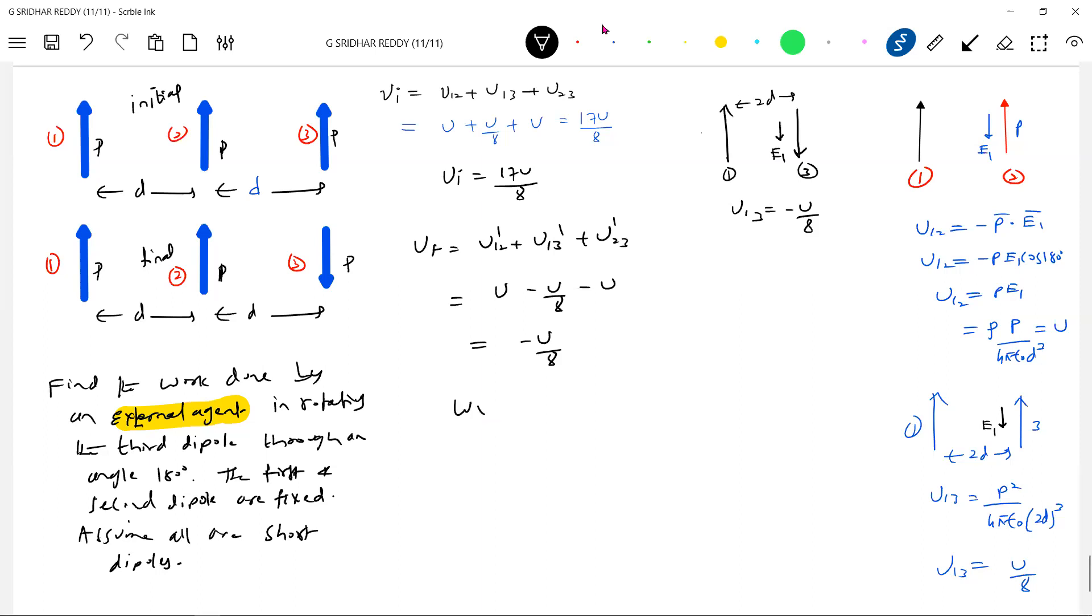So what is work done by external agent? Work done by external agent should be equal to UF minus UI. What is UF minus U by 8 minus 17/8 U by 8. 18 will be 9 by 4. What is value of U? P² by 4π ε₀ d³. Minus 9 P² by...